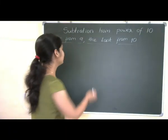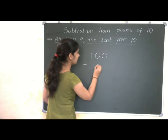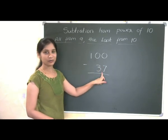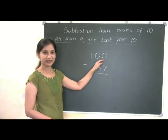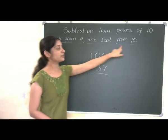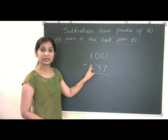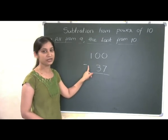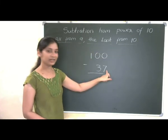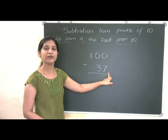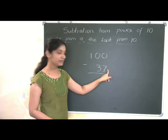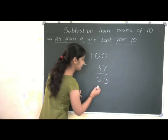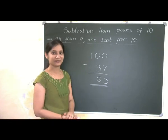As our first example, let me take 100 minus 37. Here you are observing a power of 10 and another number, so you need to subtract 37 from 100. Our rule is: all from 9 and the last from 10. That means for the second value, you deduct each digit from 9, and the last digit from 10. So 10 minus 7 gives 3, and 9 minus 3 gives 6. So 63 is our answer.